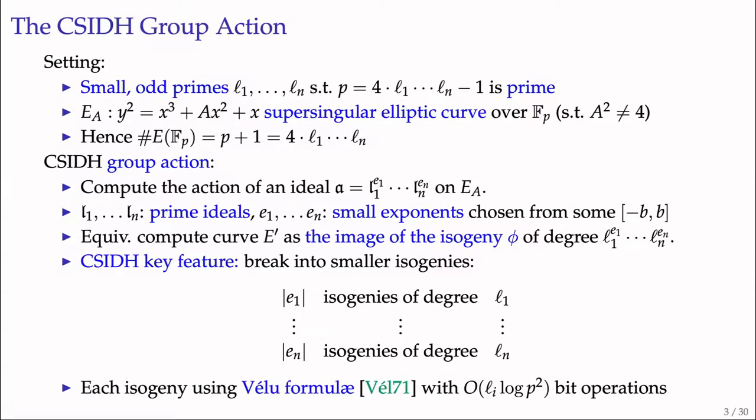The CSIDH group action works over a finite field Fp, where p is a large prime of the special form 4 times some small odd primes minus 1. It uses supersingular elliptic curves Ea defined over this prime field and represented in Montgomery form. In CSIDH, we compute the action by an ideal where Li are prime ideals and Ei are small exponents chosen uniformly from some interval. The CSIDH group action equals the computation of curve E prime as the image of curve E under an isogeny of degree L1^E1 times until Ln^En. The entire isogeny computation breaks into many smaller isogeny computations, each computed using Vélu's formula.